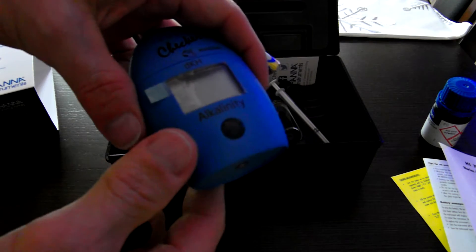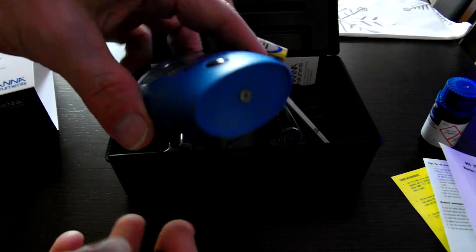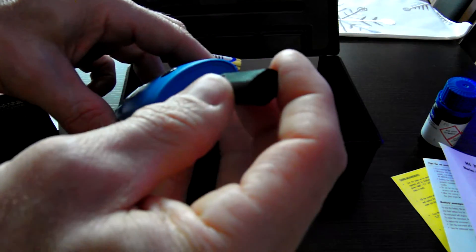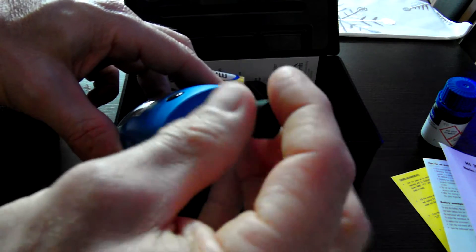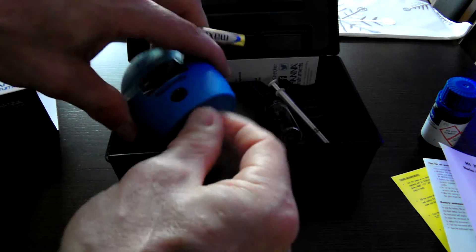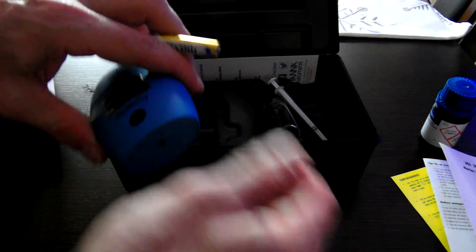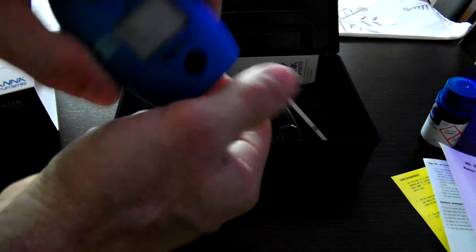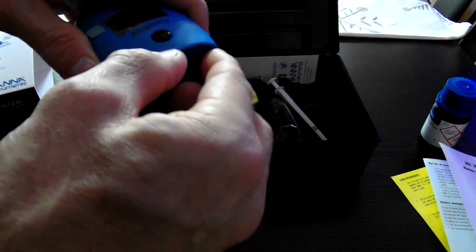So in order to get the battery in this new fresh out of the box Hanna Checker, there's a little Phillips screw at the base of the unit. They do provide a triple A battery. Of course, nothing's perfectly easy.